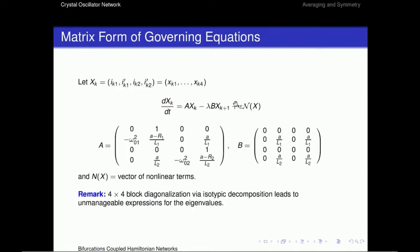The idea is that when we go to the actual dynamical system equation, written in matrix form, we have X sub K, which is the K crystal oscillator. In matrix form, we have this matrix A and the coupling matrix B. Lambda is the coupling parameter, and B is the coupling matrix. And N is some pretty complicated vector of nonlinear terms. If we want to use some symmetry techniques to reduce this system to a block diagonal system via the isotypic decomposition, what happens is that the 4x4 blocks that we obtain, if we're looking for the eigenvalues of those, they are extremely complicated, and we do not get nice analytic expressions for those.